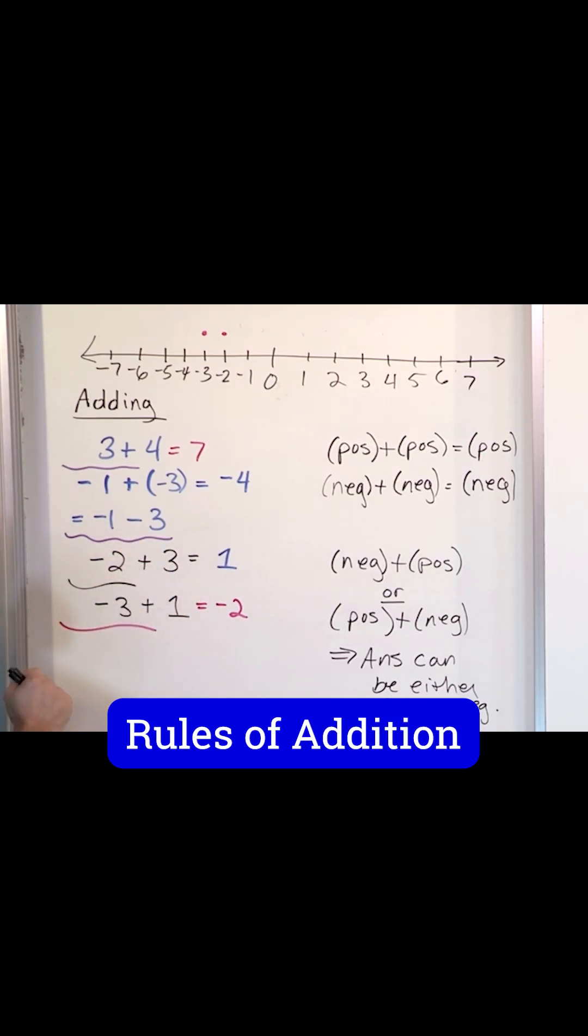Anytime you have mixed signs and you're adding them together, you always subtract the numbers. Bigger number minus smaller.